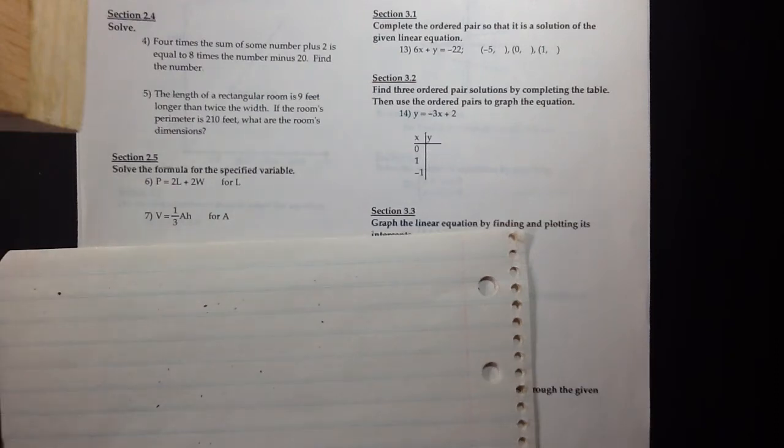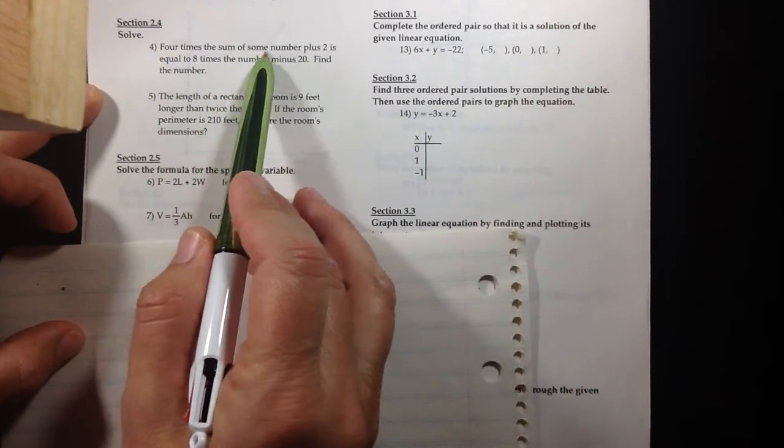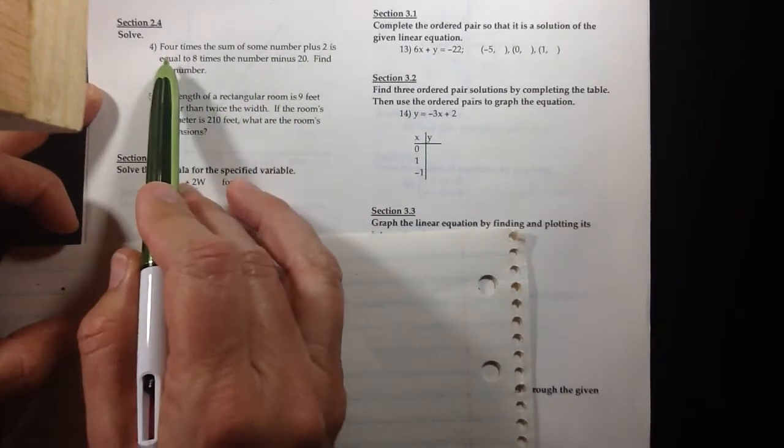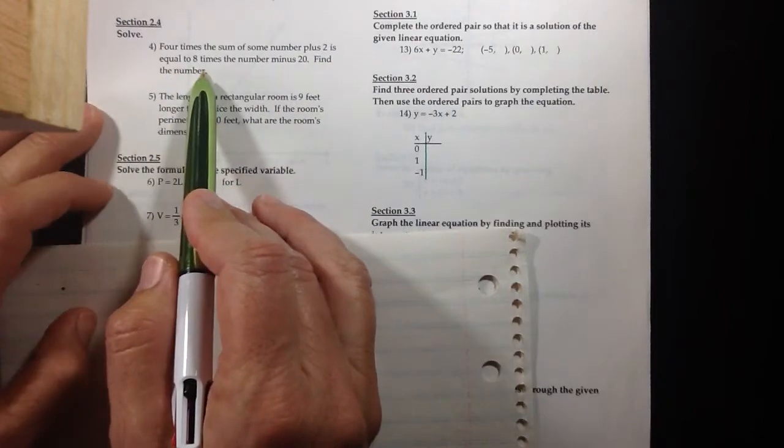We are on number four now and on number four of this review we have a story problem. Four times the sum of some number plus two is equal to eight times the number minus twenty. Find the number.